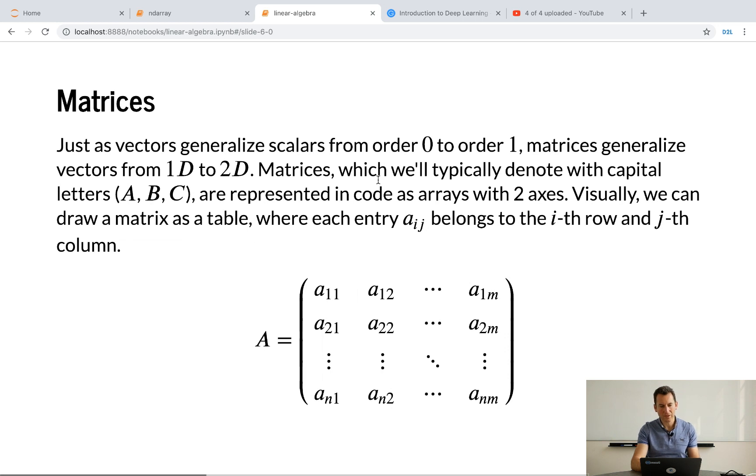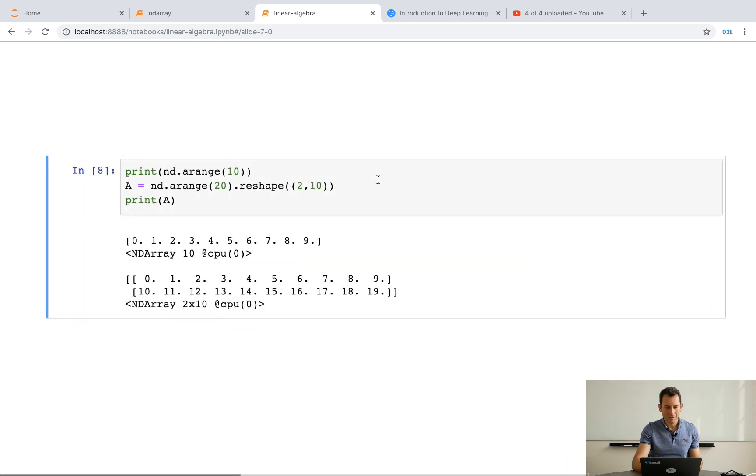Now, matrices are just two-dimensional objects. Okay. So, there we have it. And I can go and create such an object. So, let's say I maybe create a vector of length 10, or I create a vector of length 20, and then reshape it as 2 and 10. Pretty straightforward, right?